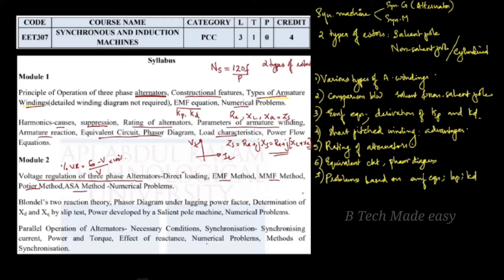The EMF method is also called the Ampere-Turns method. Using the EMF method, we can determine the total synchronous reactance, denoted as Xs. The synchronous reactance Xs is split into leakage reactance Xl and the magnetizing reactance.